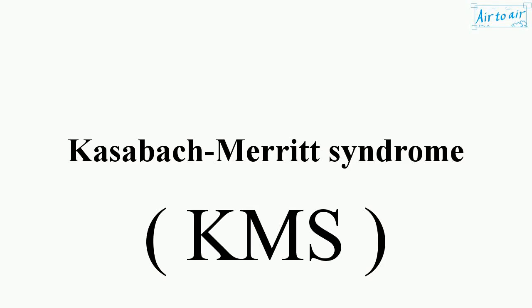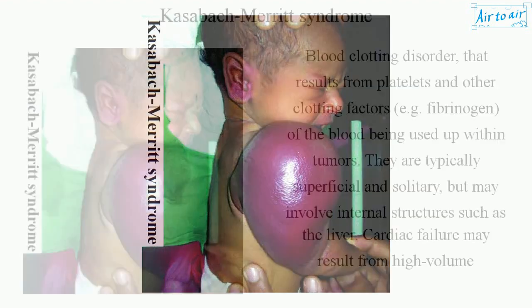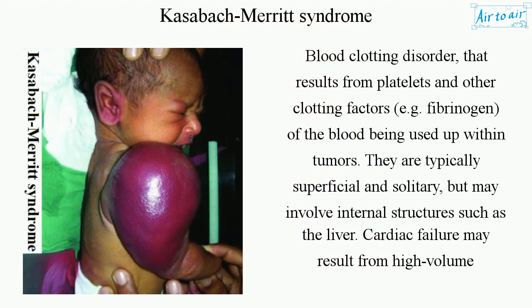Kasabach-Merritt Syndrome is a blood clotting disorder that results from platelets and other clotting factors, e.g. fibrinogen, of the blood being used up within tumors.